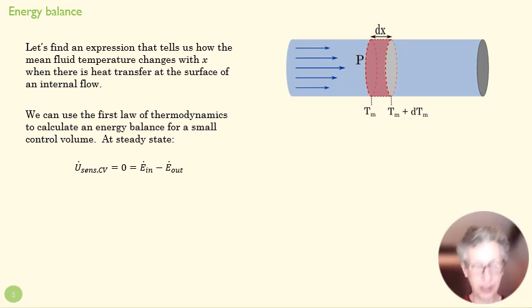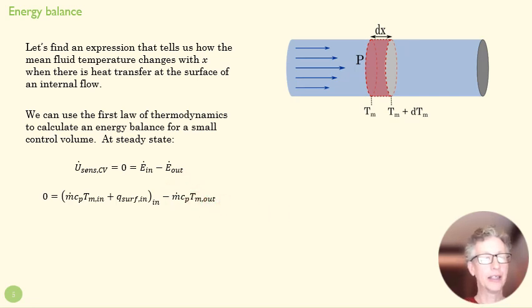We start with a zero as our change in energy, and then we can calculate our energy in. Our energy in is the mass energy that flows in the left side, plus whatever comes in the surface, and then our energy out is whatever flows out the right side. I can take these two m_dot terms and subtract them, and since m_dot is the same on the left as on the right, in other words, I've got the same mass flowing in as I have flowing out.